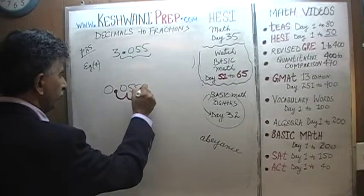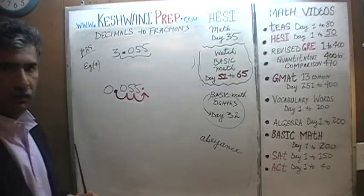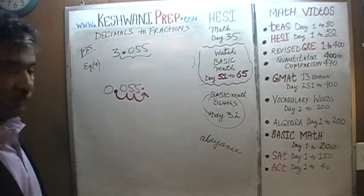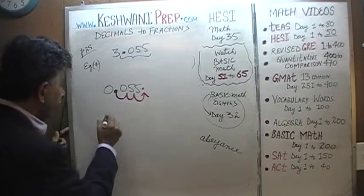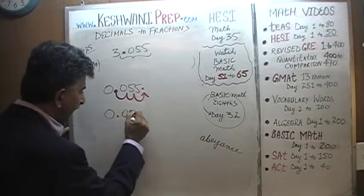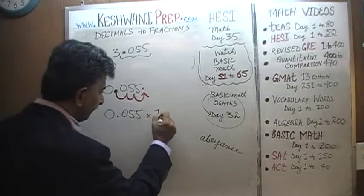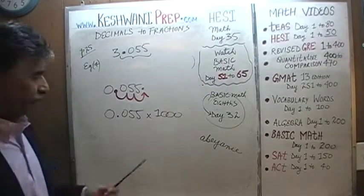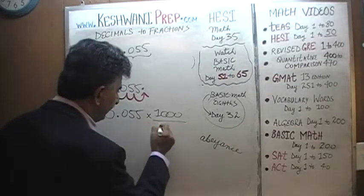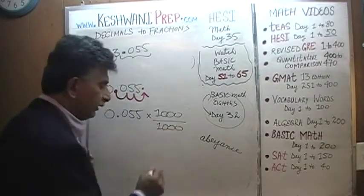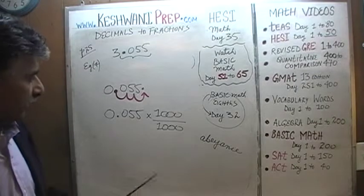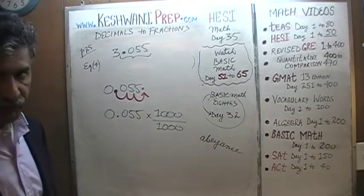One, two, three — the decimal has to come over here. So if we have to move the decimal three spots, we need to multiply 0.055 by a thousand. If we multiply the top by a thousand, we must multiply the bottom by a thousand — otherwise we will have changed the value of the given quantity. That's okay because a thousand over a thousand is just one.